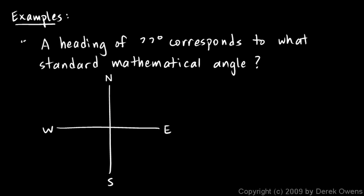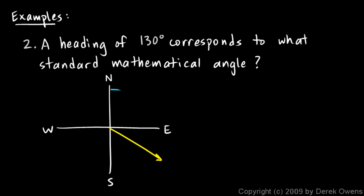For Example 2, I'm just going to change the number. Example 2 is a heading of 130 degrees — that corresponds to what standard mathematical angle? 130 degrees is about here, rotating clockwise from north. We want to know the mathematical angle, which is counter-clockwise from the x-axis.